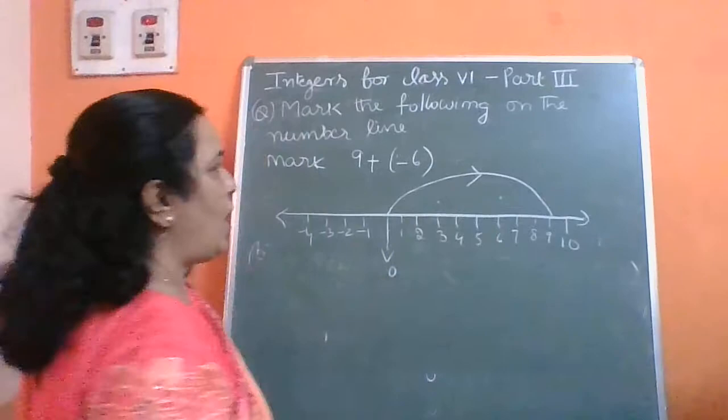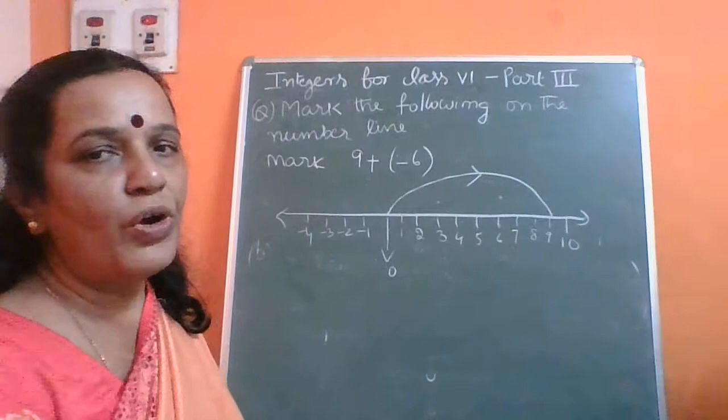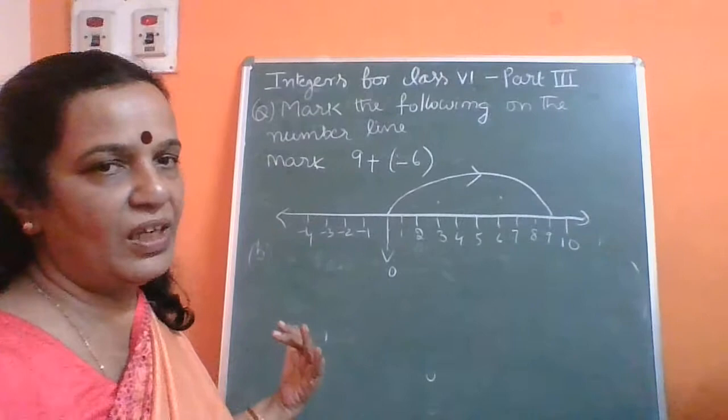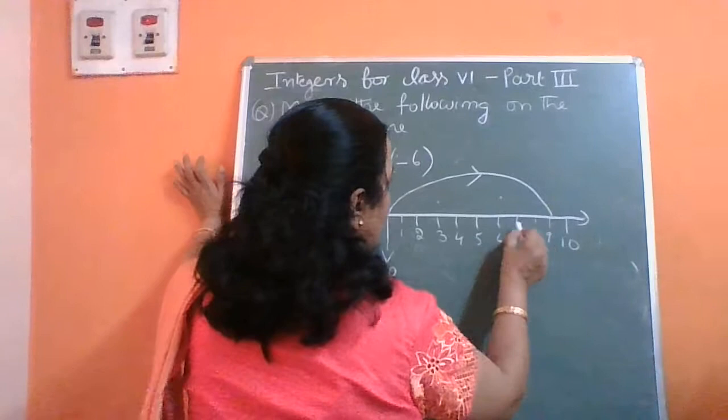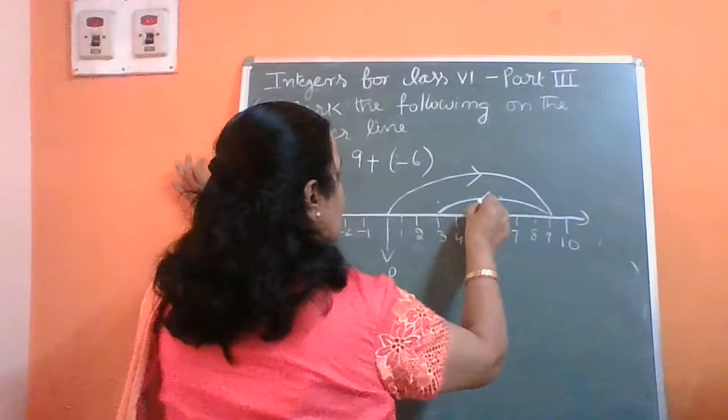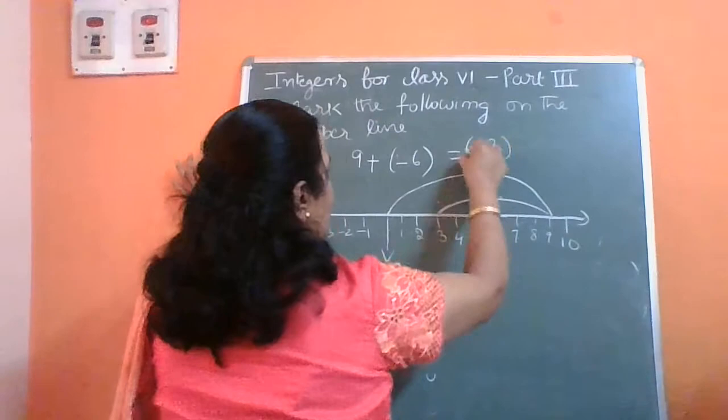And come back 6. Plus means you have to go to the right side; more means you have to go to the right side. And less means you have to come to the left side; minus means you have to come to the left side. So counting back 6 steps from 9: 1, 2, 3, 4, 5, 6. Therefore, 9 plus minus 6 is plus 3.